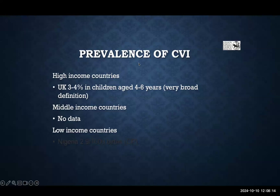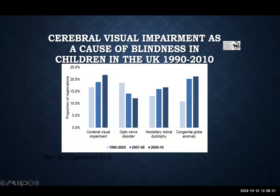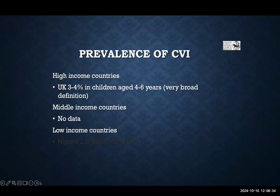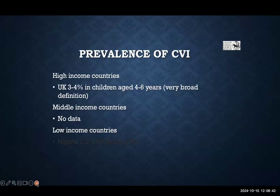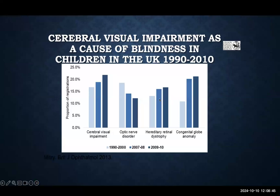The prevalence is higher than we think. CVI is the commonest cause of visual impairment — probably one in every primary school class child has CVI in the UK, from population-based studies. We have less information in middle and low-income countries. Prevalence is increasing in the UK because we're saving more premature babies or babies with a stormy birth, but we don't prevent the morbidity — the brain damage — that goes with it.